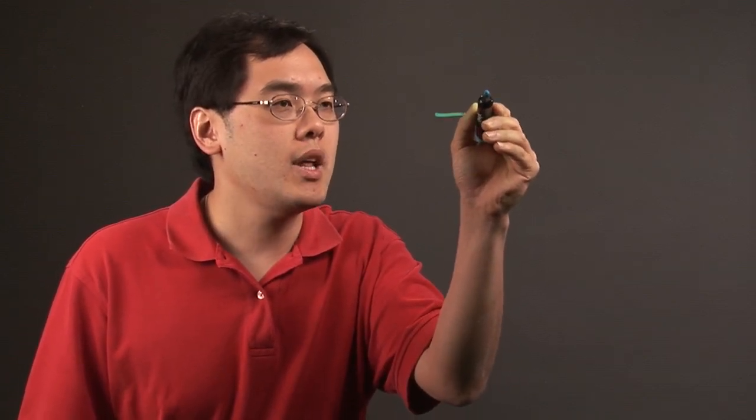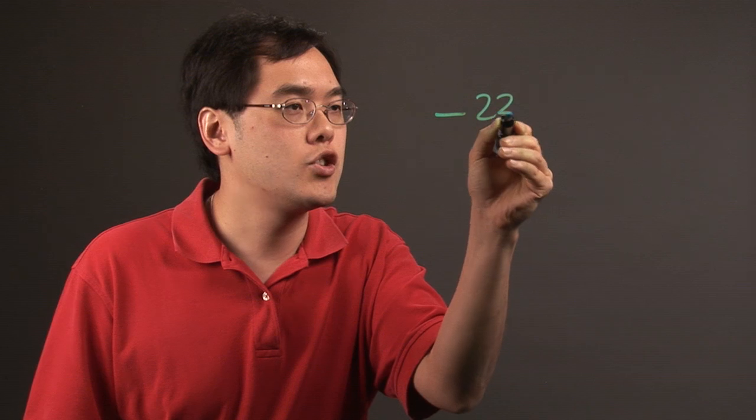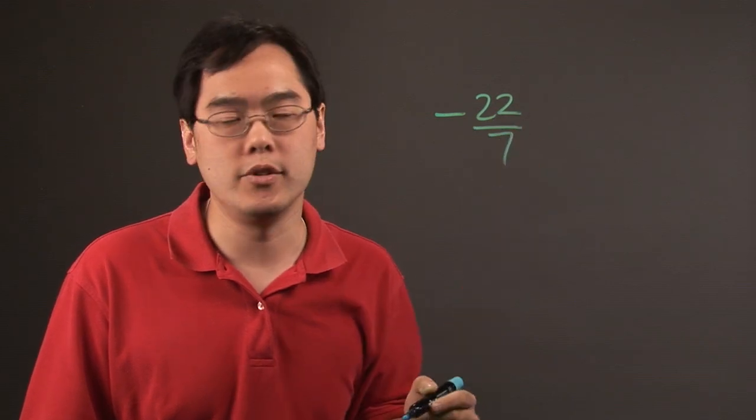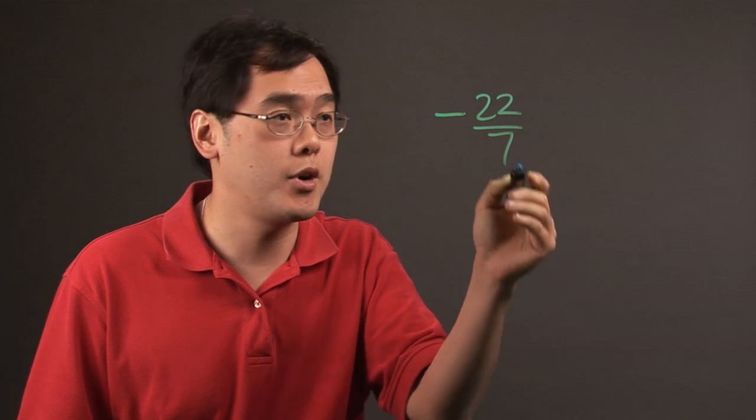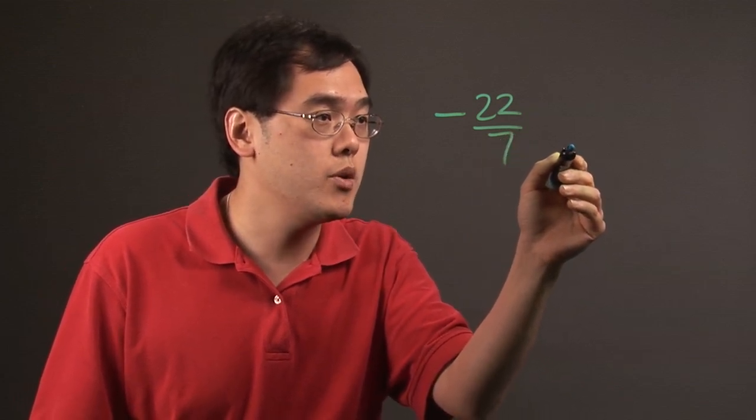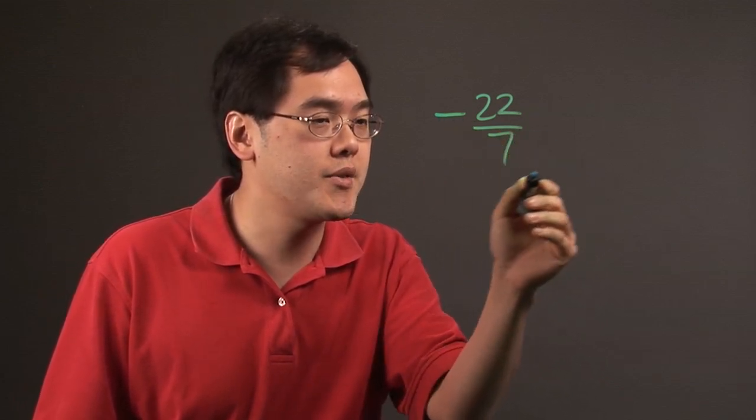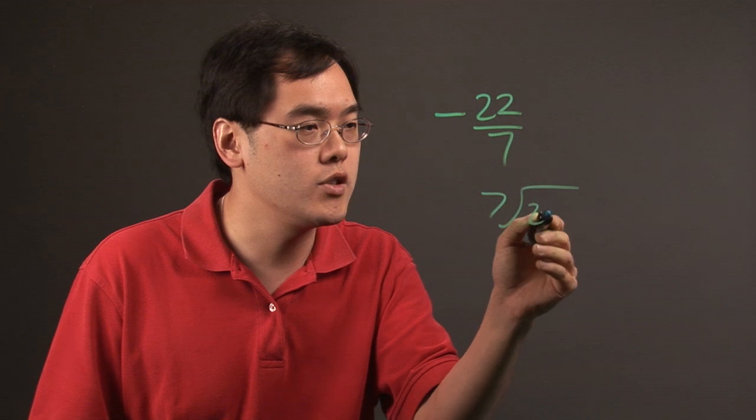If you have, for example, negative 22 over 7, what you can do is reduce it, or you can even turn it into a mixed number. Just do the same thing as you normally would. Forget about the negative sign for right now and just divide 7 into 22.